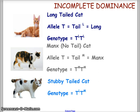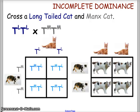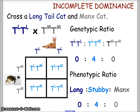Just as with codominance, we can do incomplete dominance in a Punnett square. If we cross a long-tailed cat (TL TL) with a Manx cat (TM TM), the two TL alleles are segregated across the top and the TM alleles on the left. All offspring come out TM TL, meaning all offspring are stubby-tailed cats.